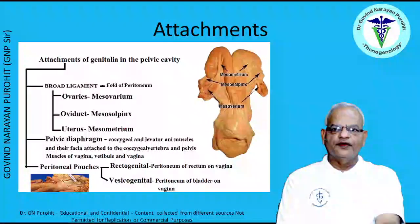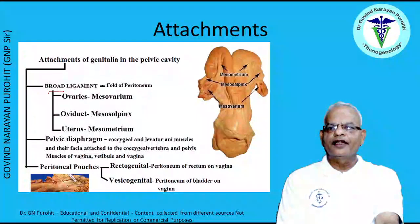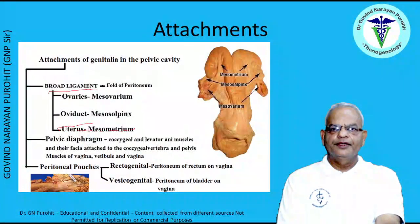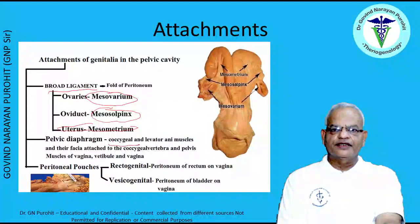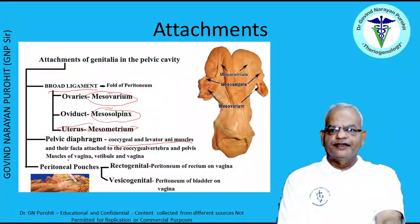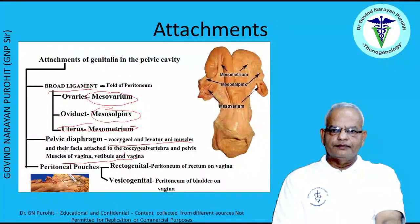The uterus is held in place by a fold of peritoneum broadly known as the broad ligament. The part of the broad ligament that holds the uterus is the mesometrium, the part that holds the oviduct is the mesosalpinx, and the part that holds the ovary is the mesovarium. The pelvic diaphragm is formed by the coccygeal and levator ani muscles and their fascia attached to the coccygeal vertebra and pelvis.